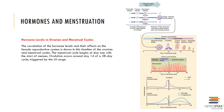Ovulation occurs on day 14 due to an LH surge. The post-ovulatory phase, also called the secretory phase, is approximately day 15 through 28. The uterine glands begin to secrete nutritious glycogen-rich mucus into the uterine cavity to sustain the blastocyst until implantation has occurred. Secretion and preparatory changes in the endometrium occur in response to rising progesterone from the corpus luteum in expectation of a potential embryo.